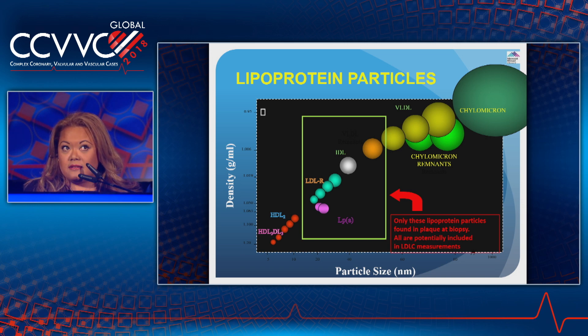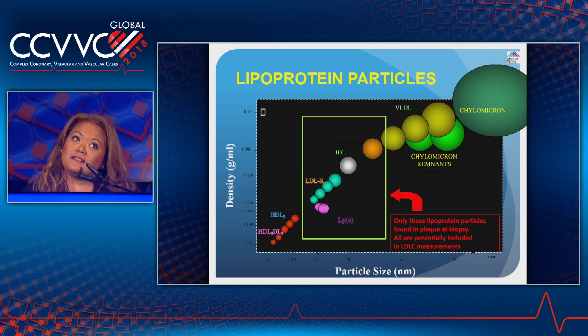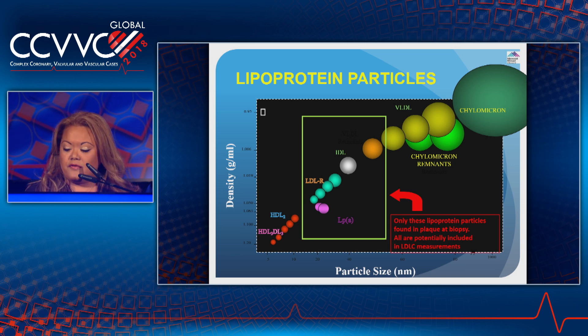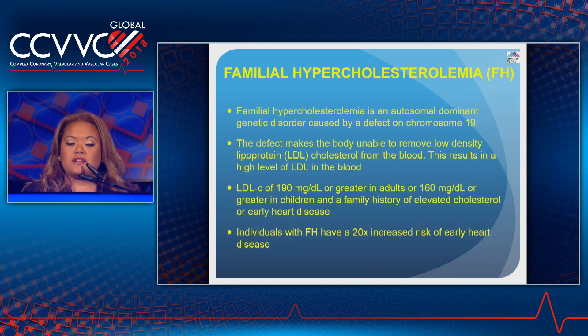Technologies that sort particle size cannot separate IDL and LP(a) from LDL, as these particles have overlapping size. They do differ by density, so ultracentrifugation is the best way to separate total LDL from its three components: LP(a), IDL, and real LDL or LDL-R. Each requires different therapies, confers different risk, and has different inheritance.